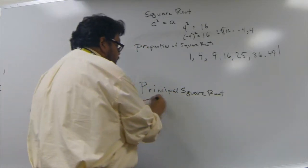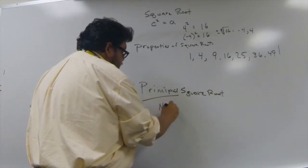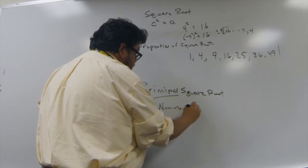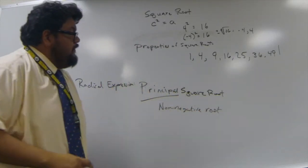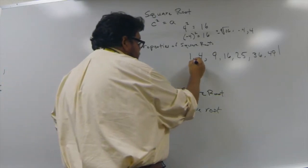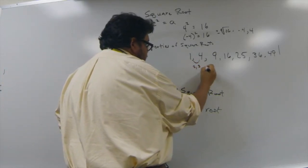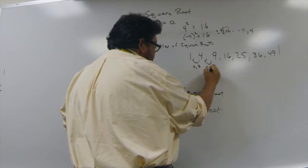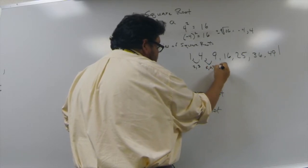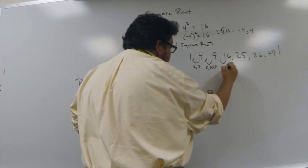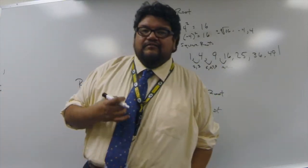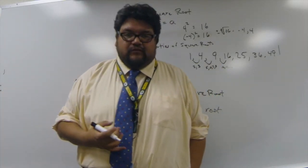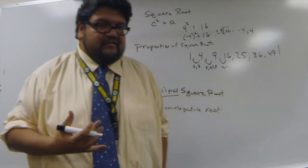The principal square root is the non-negative root of a number. In between the numbers 1 through 49, there are numbers like 2, 3, 5, 6, 7, 8, 10, 11, and so on. Now, those numbers also have square roots, but they're not perfect square roots, because those aren't perfect square numbers.